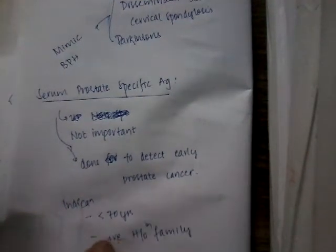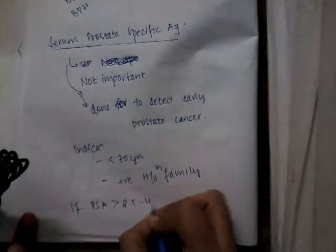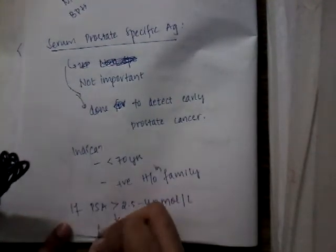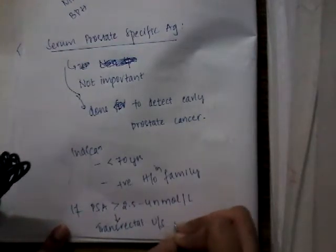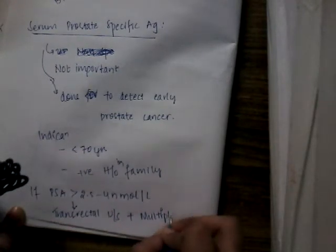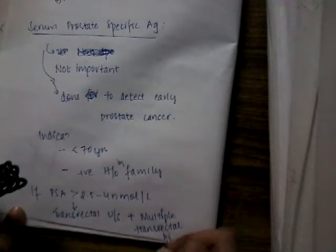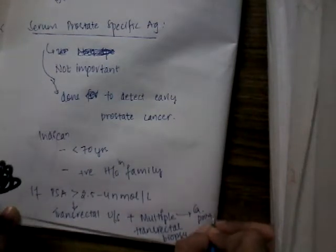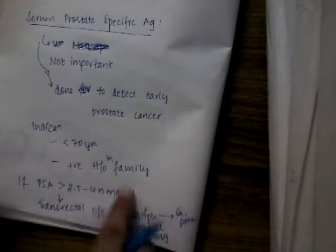If this prostate specific antigen is more than 2.5 to 4 nanomoles per liter, then we should do transrectal ultrasound and multiple transrectal biopsies for carcinoma prostate.